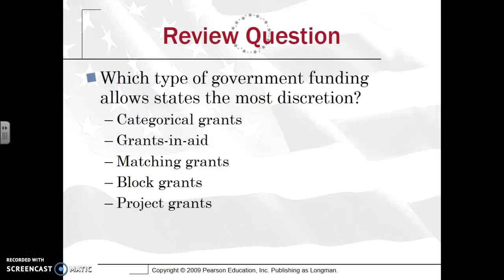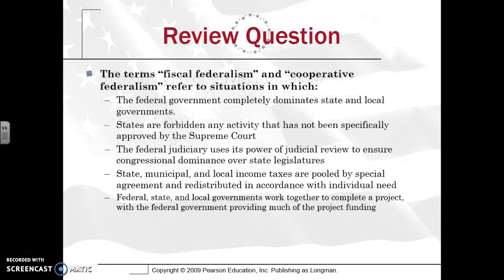Review question: Which type of government funding allows states the most discretion? If you said block grants, you would be correct — think of it like a block of marble that you can sculpt any way you want. States love that; there are really no strings attached, as opposed to categorical grants, which mandate states to do certain things. Block grants are the preferred type of grant for states.